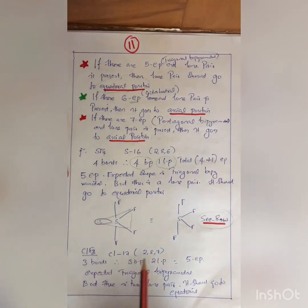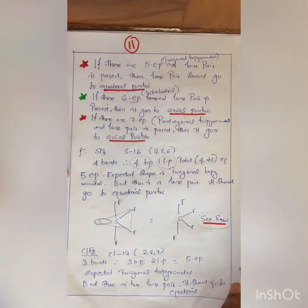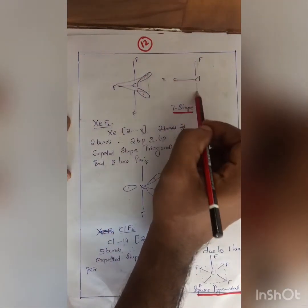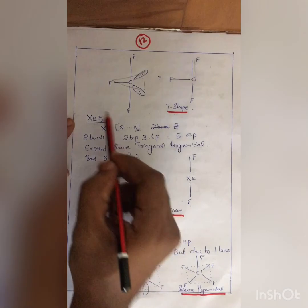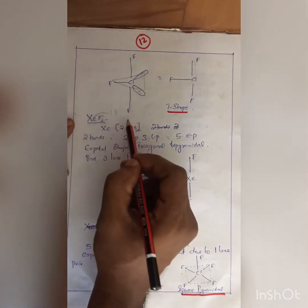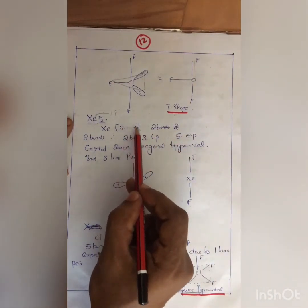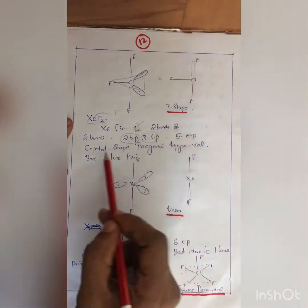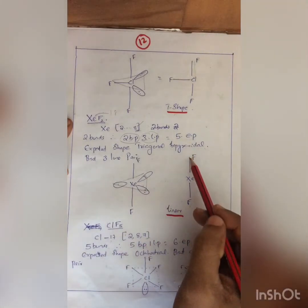For ClF3 — chlorine configuration 2,8,7 — there are 3 bonds: 3 BP, with 4 remaining electrons giving 2 LP, total 5 EP. The expected shape is trigonal bipyramidal, but 2 lone pairs go to equatorial positions, giving a T-shape. For XeF2 — xenon is an 18th group element with 8 outer electrons, configuration 2,...,8 — there are 2 bonds: 2 BP, with 6 remaining electrons giving 3 LP, total 5 EP. The expected shape is trigonal bipyramidal, but 3 lone pairs occupy equatorial positions, giving a linear shape.